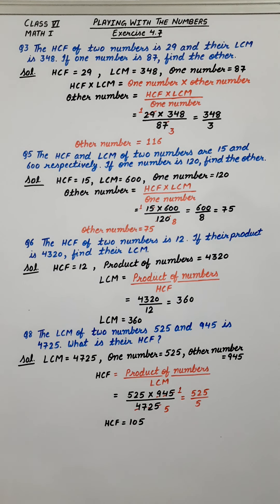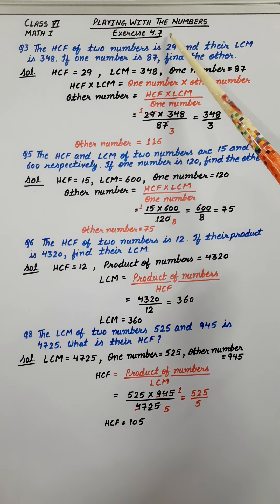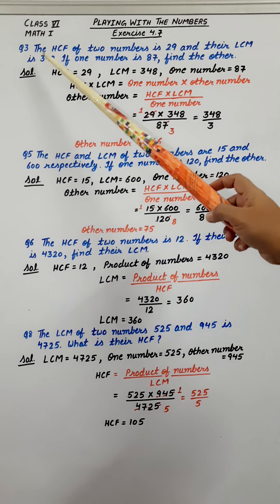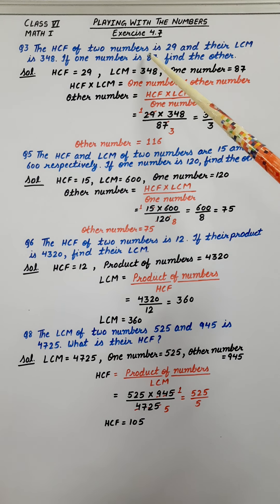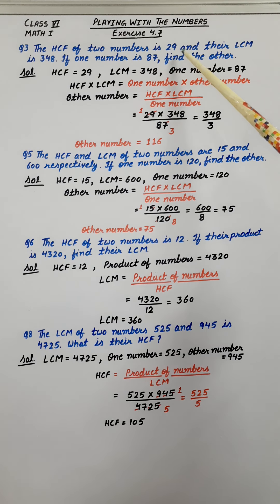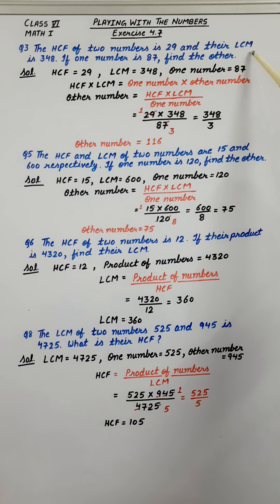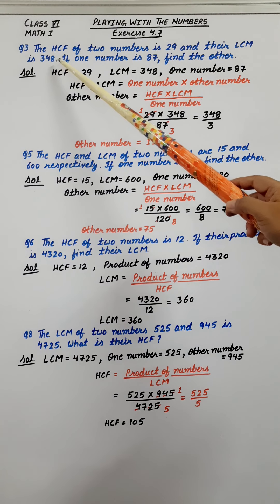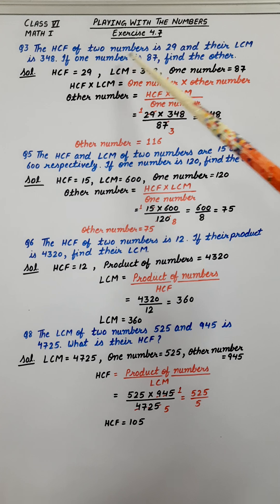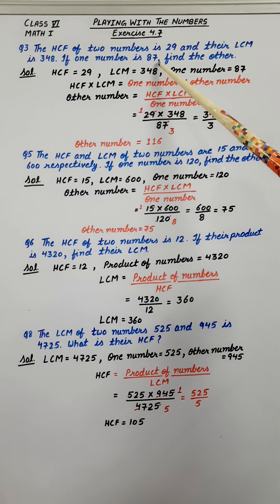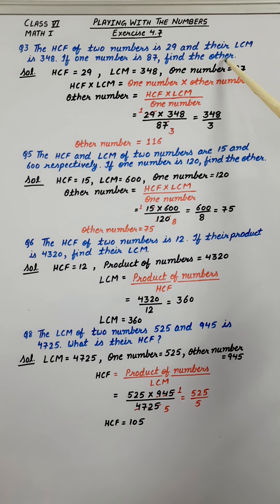Let's continue with exercise 4.7, question number 3. The HCF of 2 numbers is 29 and their LCM is 348. If one number is 87, we have to find the other number.